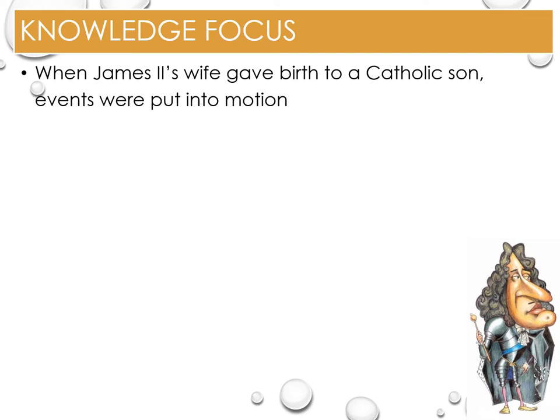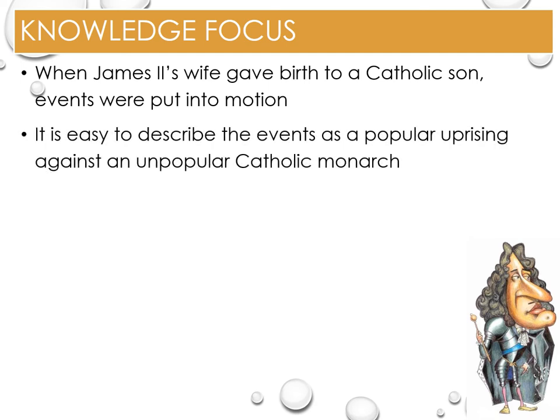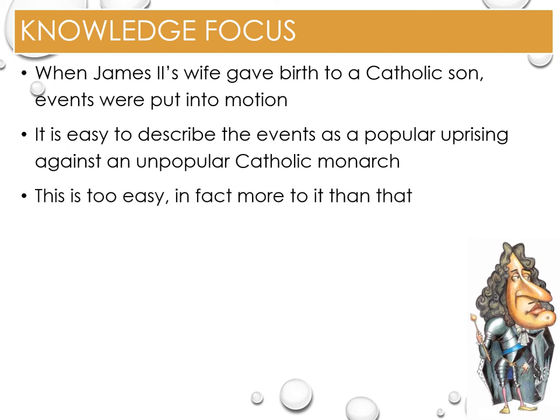In May 1688, the seven bishops on trial were acquitted to public rejoicing. The baby Prince James was a bridge too far. With only Protestant daughters, many were prepared to wait for James II to die, but now a Catholic succession was assured. Seven key figures, known as the Immortal Seven, wrote to William of Orange and invited him to bring a force to fight James and claim the throne of England in the name of his wife Mary, James II's eldest daughter. It is very easy and a little simplistic to label the event as a popular uprising against the deeply unpopular Catholic monarch James II - there is far more to it than that. Money, power, religion, loyalty and enmity were all wrapped up in the events of 1688.